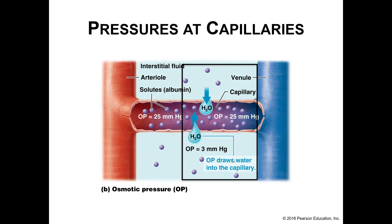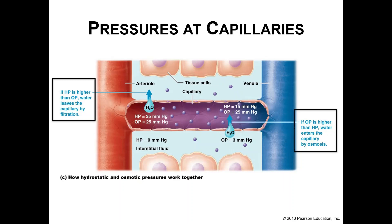Osmotic pressure is 25 millimeters of mercury on the arterial end as well as the venous end — it did not change because those solutes have not moved. There are a few solutes in your interstitial fluid as well, but they don't create a very large pressure gradient. So the osmotic pressure number is higher inside the capillary, meaning water will move back into the capillary. On the arterial end, hydrostatic pressure is higher than osmotic pressure, forcing water out. On the venous end, hydrostatic pressure has greatly decreased, so osmotic pressure is higher and draws water back in — we call this reabsorption.